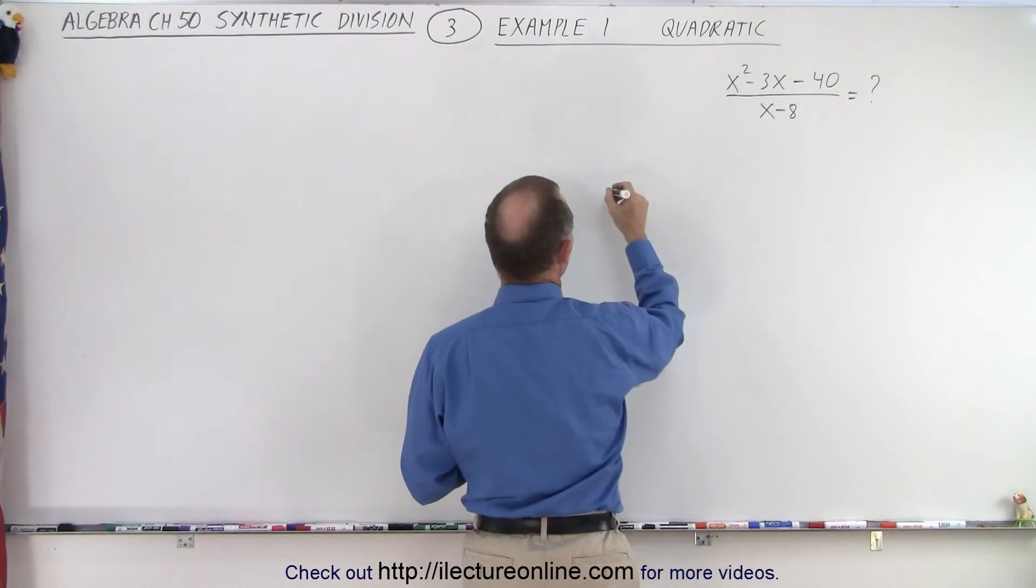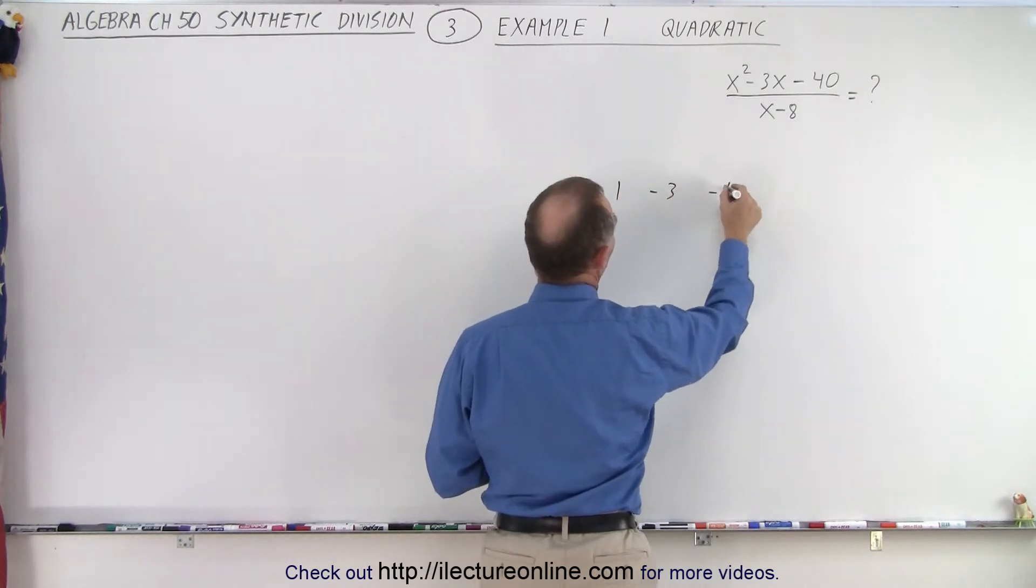1, negative 3, negative 40. So we have 1, negative 3, negative 40.